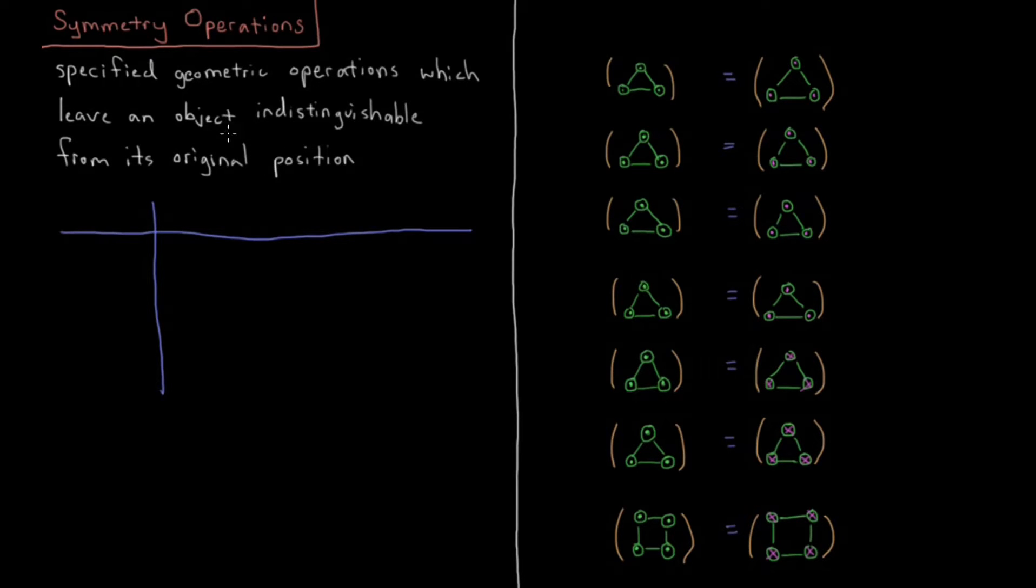We might have kind of vague ideas of what symmetry means or that something is more or less symmetric than another kind of object, but the goal of this chapter is to really formalize what we mean by symmetry, what symmetry can do, and what symmetry tells us about the properties of molecules based off of the type of symmetry that they have. What kinds of things are and are not allowed for that molecule given the type of symmetry that it has.